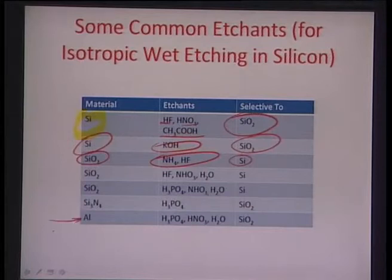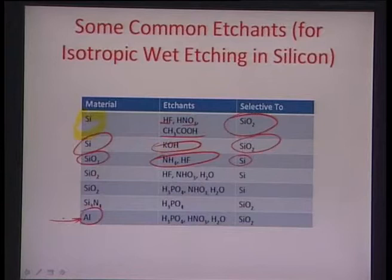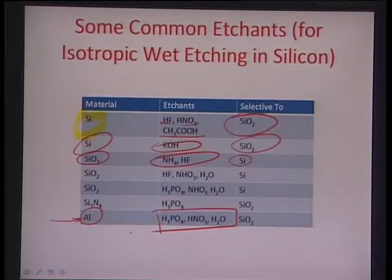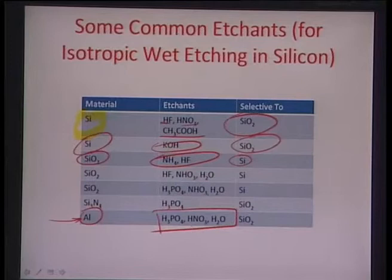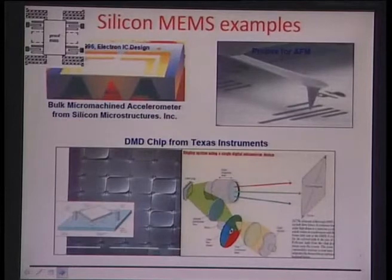There are also etchants for metals on silicon substrates. Metals are used to develop interconnects between different parts of circuitry on a wafer. For aluminum, a combination of H3PO4, HNO3, and water acts as a good etchant but is selective to SiO2 — the moment it encounters SiO2, etching stops, making SiO2 a good sacrificial masking layer when selectively etching aluminum.